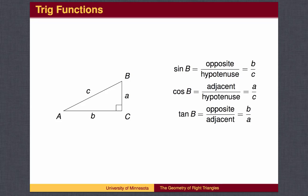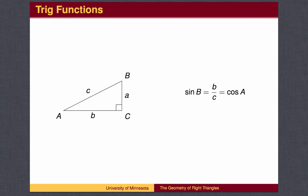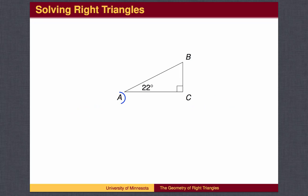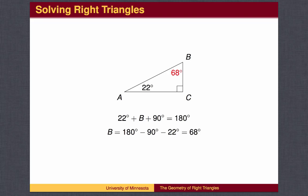The sine, cosine, and tangent of angle B are defined in the same manner. Notice that the leg opposite angle B is the leg adjacent to angle A, so the sine of B equals the cosine of A. Given the measure of angle A in a right triangle, we then know the measure of angle B, since the three angles of a triangle add to 180 degrees. For example, if angle A is 22 degrees, then angle B will be 68 degrees.